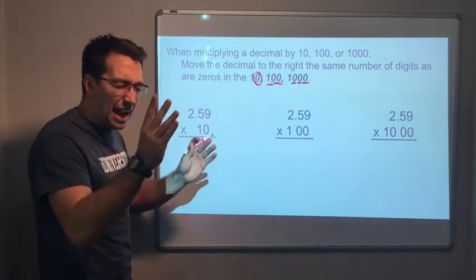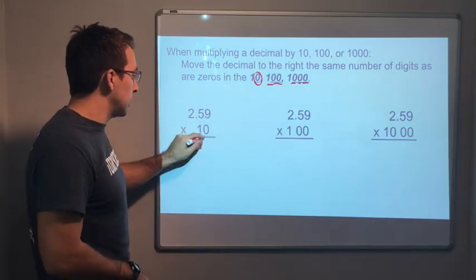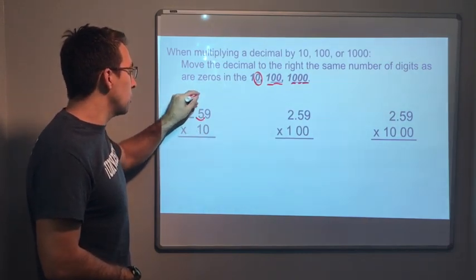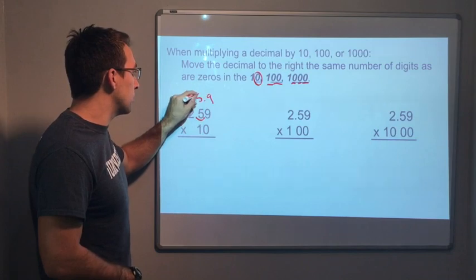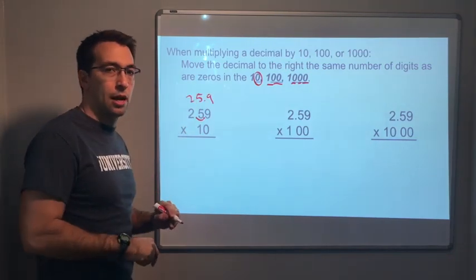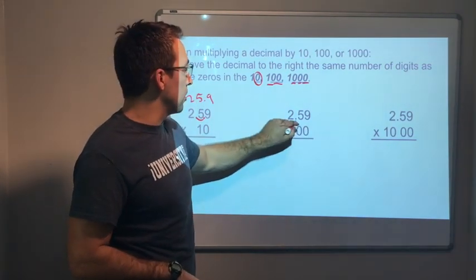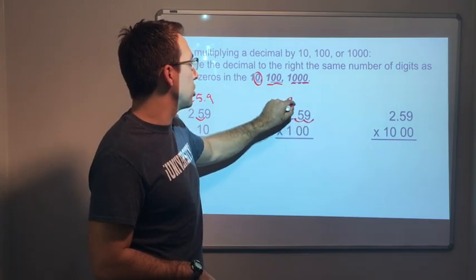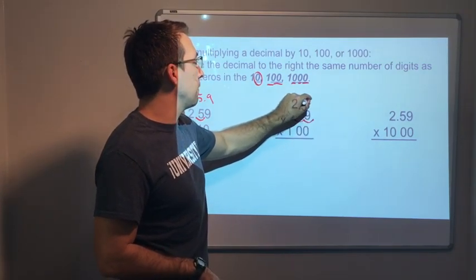So by that rule, watch. It's one zero, so you move it over here. It's going to be 2.59, twenty-five point nine. Two zeros. Okay, let's move it over. One, two. One, two. So that should be two hundred and fifty-nine.